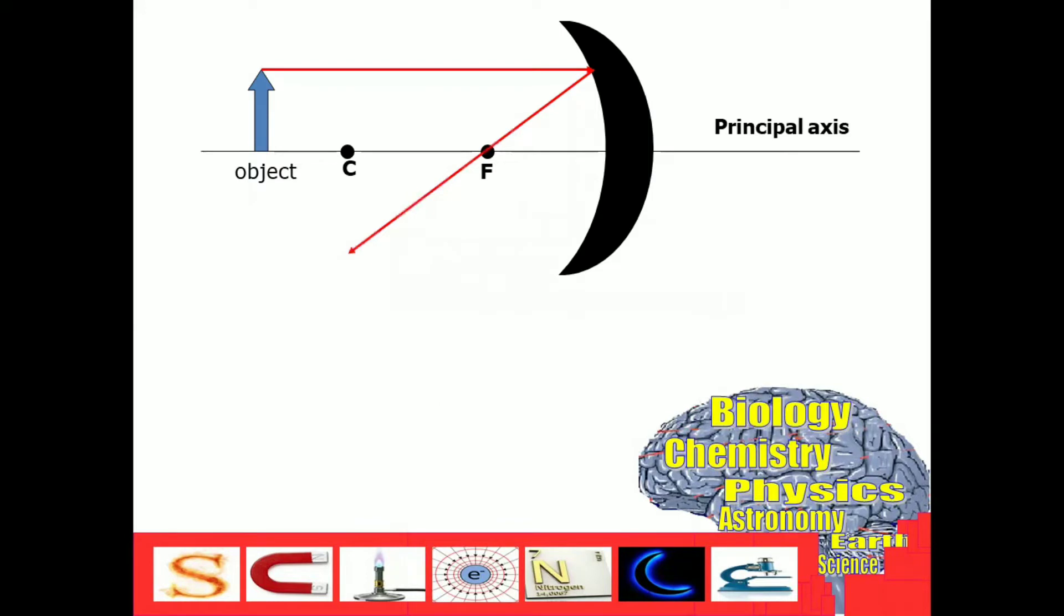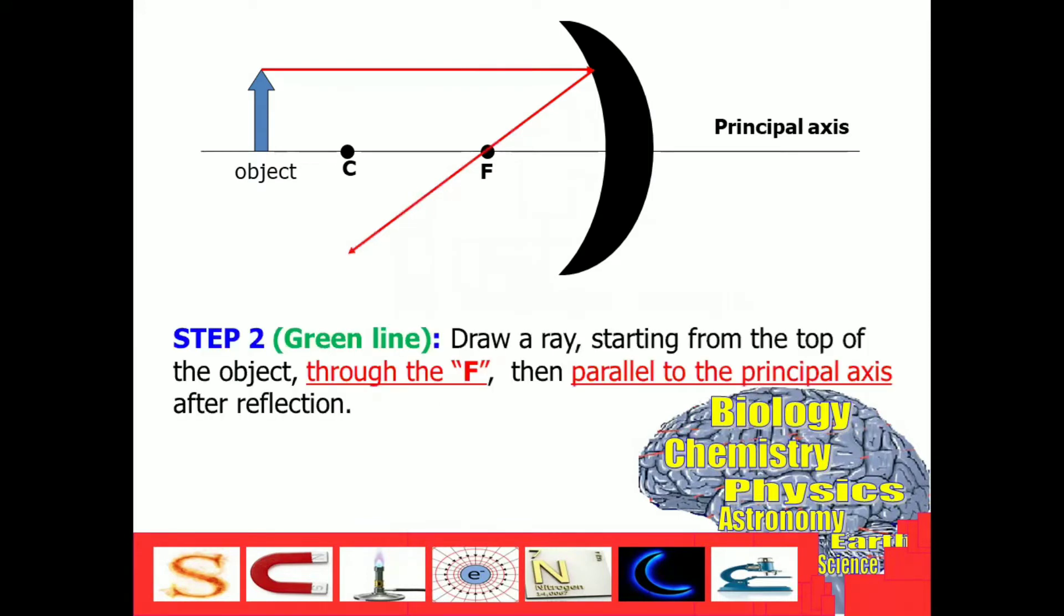Step number two, draw a ray starting from the top of the object, through the F. So how do we do that? I'll use a green line to represent our second step. Then, parallel to the principal axis after reflection. So it appears like this. That is our second line.